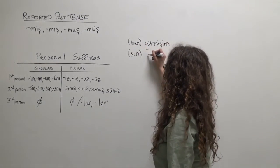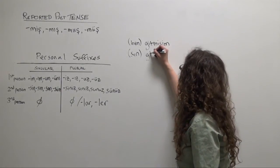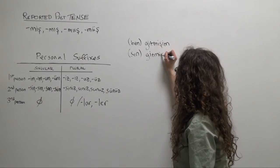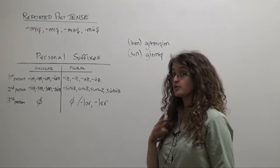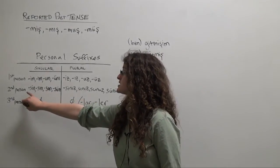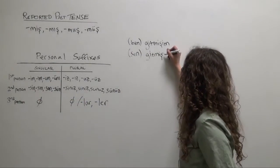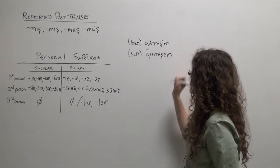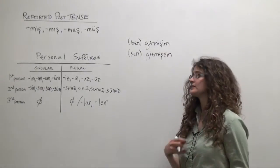Sen, you singular informal. Gitmiş. And again, we're going to follow the rules of four-way vowel harmony. Gitmişsin. You apparently or reportedly went.